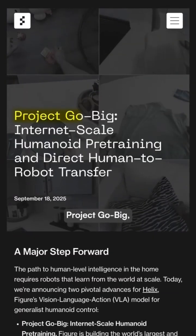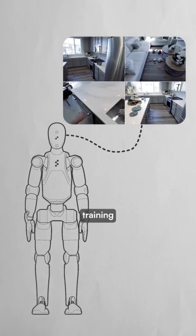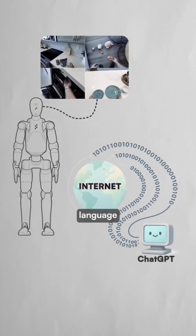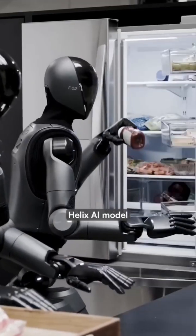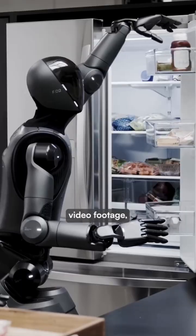They're calling it Project Go Big, and it takes an approach to robot training that mirrors how ChatGPT learned language from the entire internet. The company's Helix AI model learns directly from this human video footage,